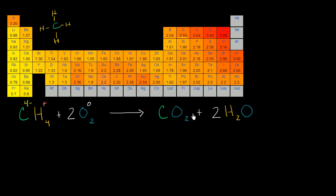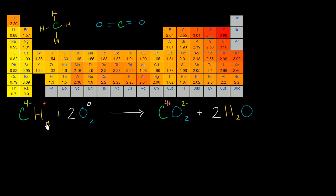Now let's think about the products. What's happening with carbon dioxide? Carbon dioxide is a carbon double bonded to two different oxygens. Oxygen is one of the most electronegative elements out there, definitely more electronegative than carbon. So in our hypothetical ionic bond world, we would say that oxygen would take four electrons — each oxygen takes two electrons from the carbon. The carbon loses four electrons, giving it a hypothetical charge of positive four. Each of these oxygens gains two electrons, giving them each a hypothetical charge of negative two. Positive four plus two times negative two is zero — it nets out. This is a neutral molecule.